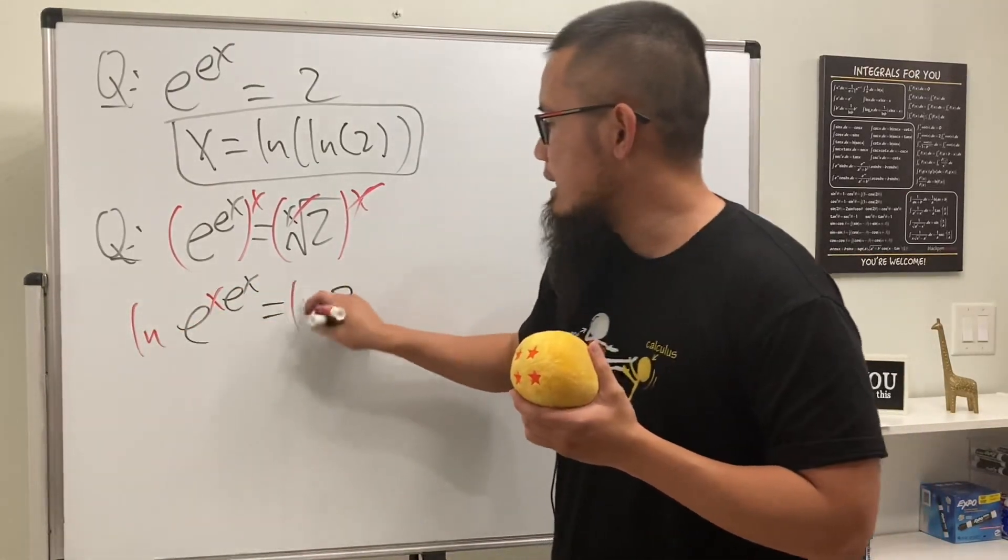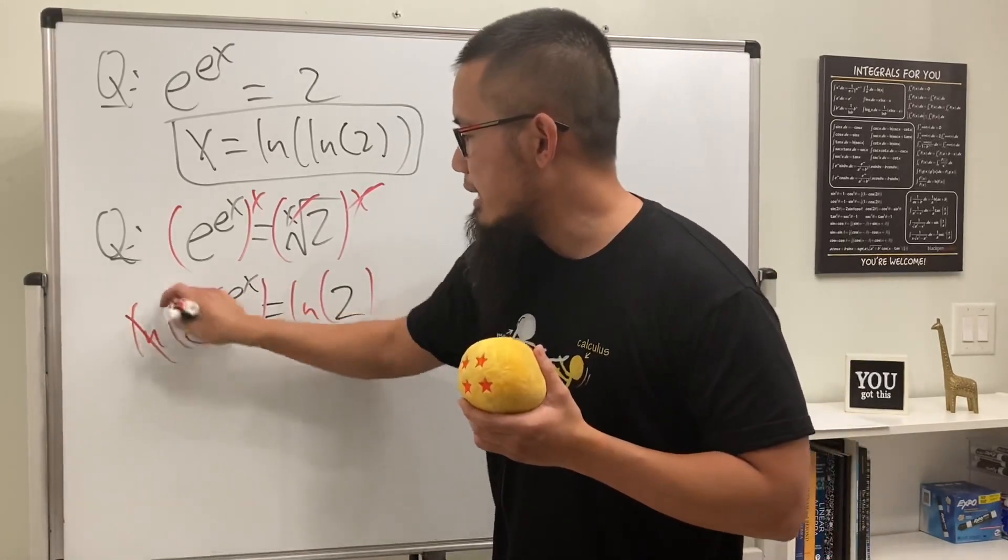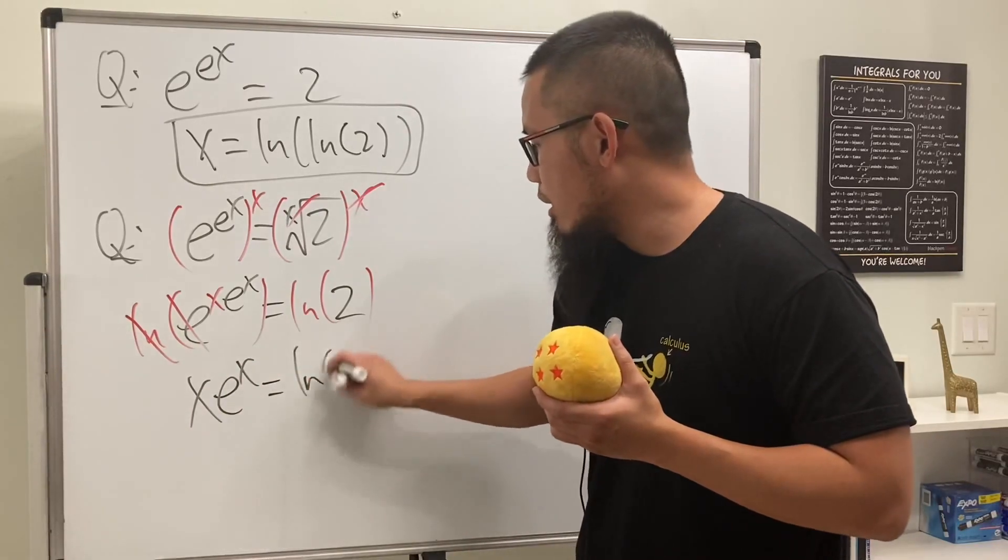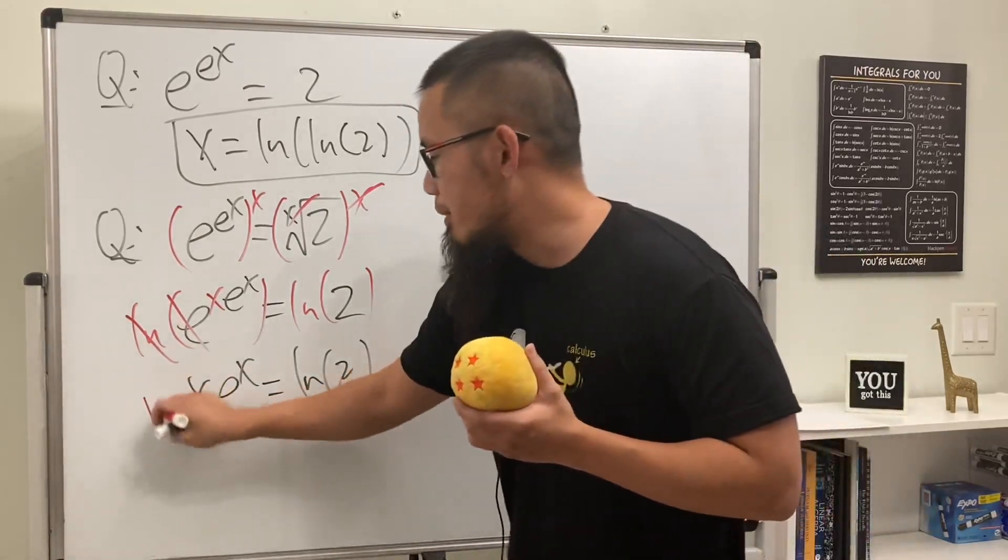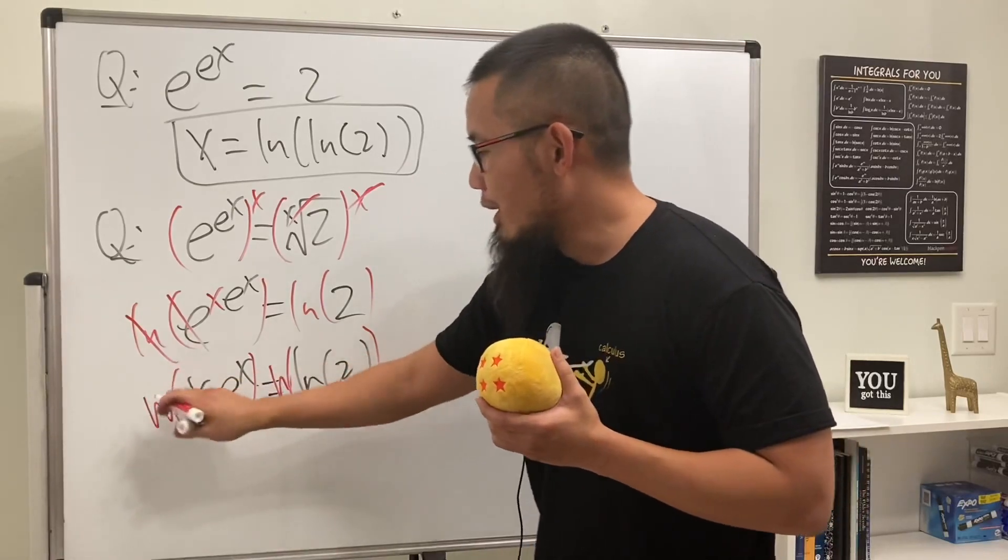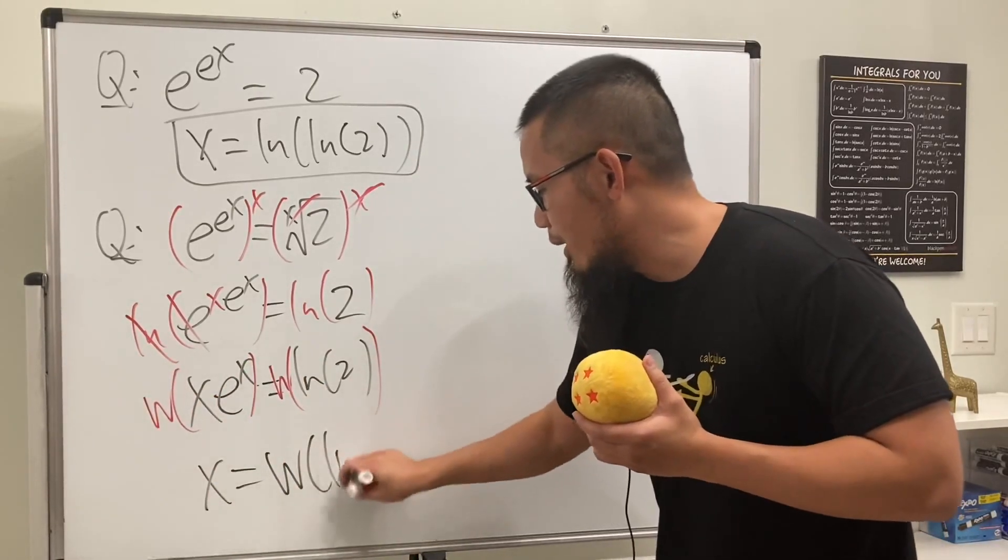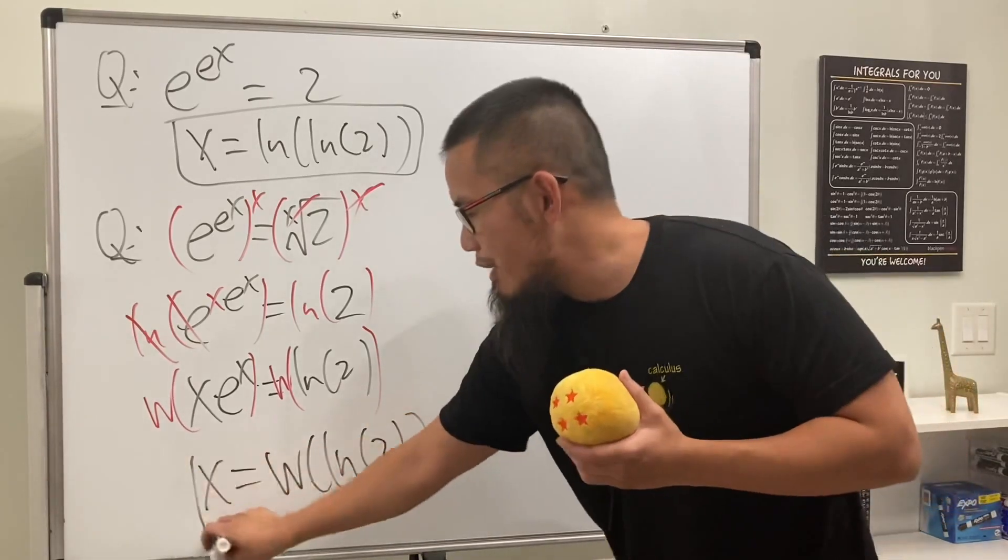Now we will take the ln on both sides first, so that way you can see that this and that will cancel, and then we will just have x e to the x is equal to ln of 2, and then we will take the Lambert W function on both sides like this, and we will see that, well, this is just going to give us x, and then we will have W of ln of 2. Very, very nice.